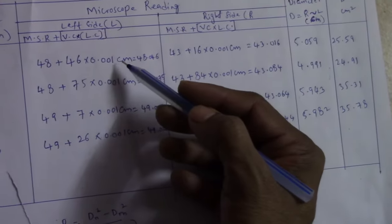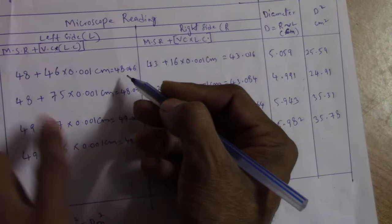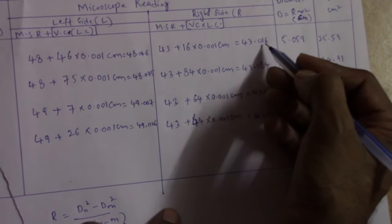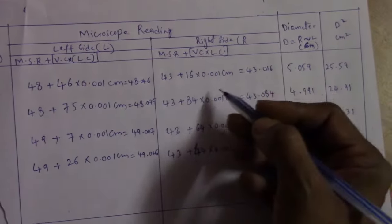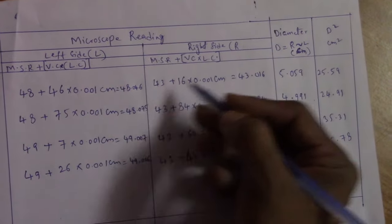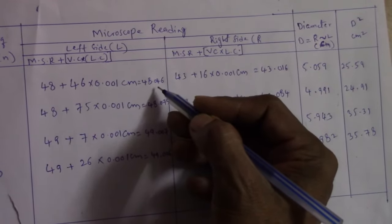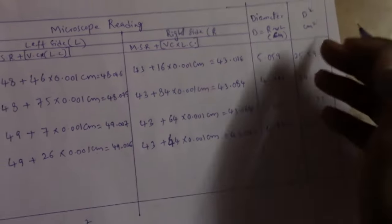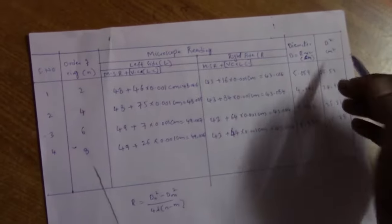After taking the MSR, VC, and LC readings towards the left and right side directions, for the second order ring the left side value is 48.046 centimeters and the right side is 43.016 centimeters. The diameter D equals the left minus right difference, giving D as 5.059 centimeters and D squared as 25.59 centimeters squared. Similarly, we calculate the diameter squared for the 4th, 6th, and 8th order rings.